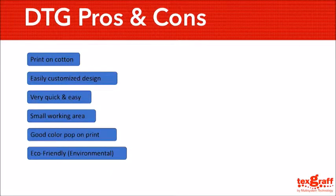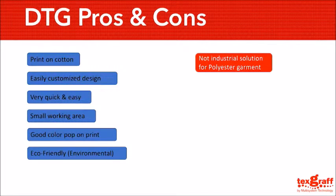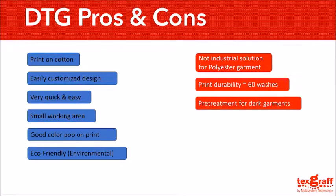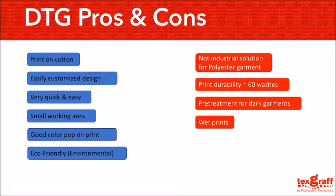Going to the cons — DTG is not actually an industrial solution for polyester fabrics because pigment ink will not stick properly on 100% polyester, although DTG technology is developing. Next is print durability or washability, which leads to roughly up to 60 washes. Next is the pre-treatment required for dark garments — it acts as a primer and allows the white ink to be printed on the t-shirt, so the CMYK inks will have a vibrant outcome and the white ink will be dry and washable. This added step is not included in the sublimation process. The last point is wet prints — after the printing stage, the ink sitting on the garment is going to be wet, requiring heat press or tunnel dryers to cure the inks.